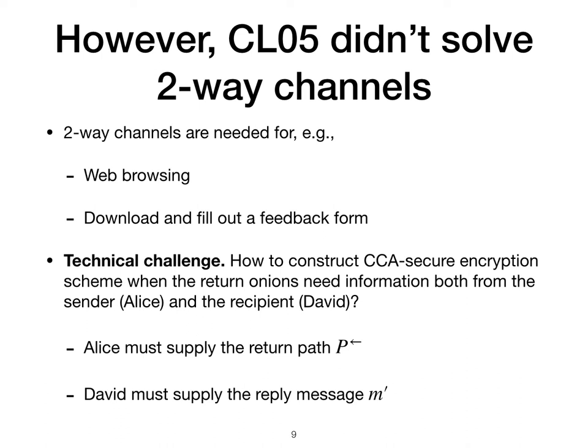However, the paper by Kavanish and Lisianskaya and subsequent follow-up work did not tackle two-way channels. When Alice's recipient David received the message from Alice, there was no method for replying to her anonymously. Two-way communication is necessary for most internet applications, for example, for web browsing or for filling out a form online. So to conduct these applications anonymously, it is clear that we need anonymous two-way channels.